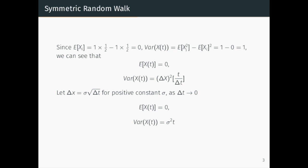We let delta x equal to sigma times square root of delta t for positive constant sigma. As delta t approaches to 0, we will have the expectation of X(t) is equal to 0, and the variance of X(t) is equal to sigma square times t.